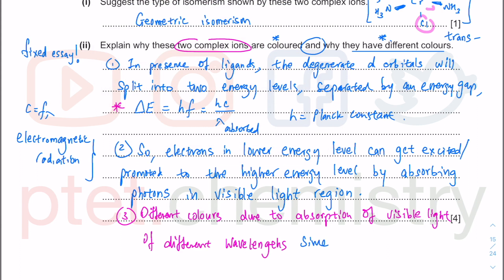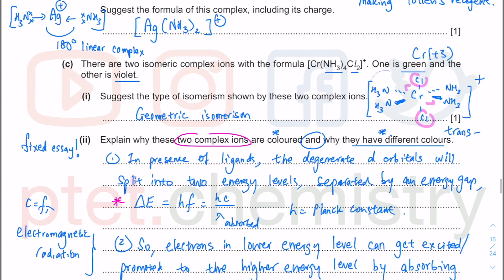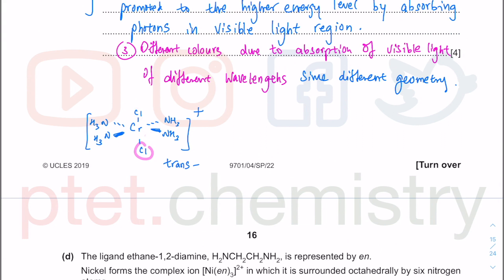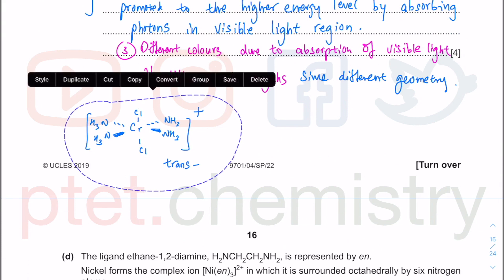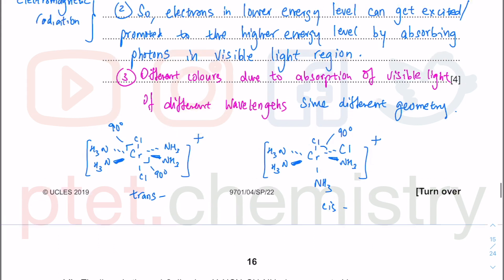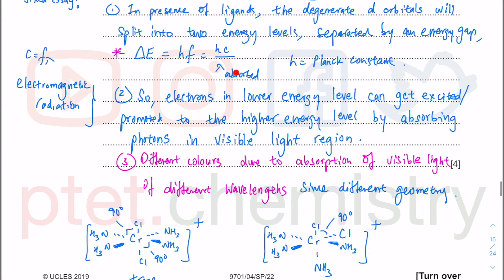In the trans isomer, the two chlorides are 180° apart; in the cis isomer they are 90° apart. This different spatial arrangement of ligands results in a different energy gap between the split d-orbital levels. A different energy gap means a different wavelength of visible light is absorbed, and therefore the cis and trans complexes appear different colors. The key thing you cannot say is 'different ligands' — the trick of this question.